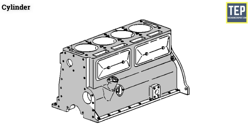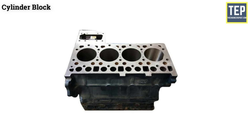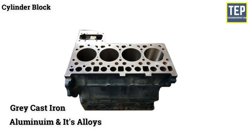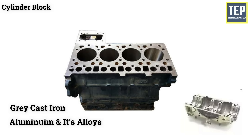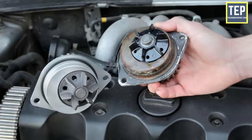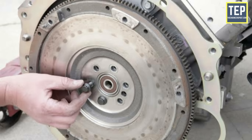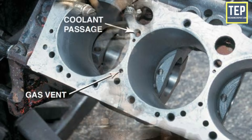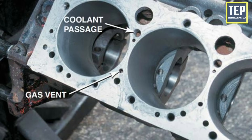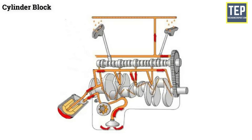Starting with the cylinder block — it is the basic framework for the engine and one of its main parts. A cylinder block consists of three parts: the cylinder in which the piston slides up and down, the port or opening for the valves, and the passages for the flow of cooling water. It is usually made of gray cast iron or aluminium alloys, with the crankcase fixed to its bottom. Other parts like timing gear, water pump, ignition distributor, flywheel, and fuel pump are also attached to it. Coolant passages are provided in the cylinder walls, and oil galleries carry lubrication oil to various components.